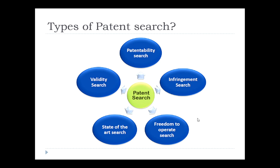Let me introduce some types of patent search. There are various types — keyword search is one technique I introduced. Other techniques are also available, and these are generalized techniques followed worldwide. There are at least five common types, but it is not restricted to just five — individual patent agents or examiners may have developed their own ways of searching.